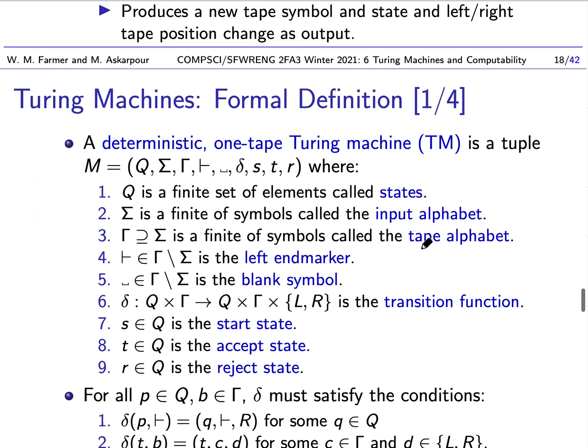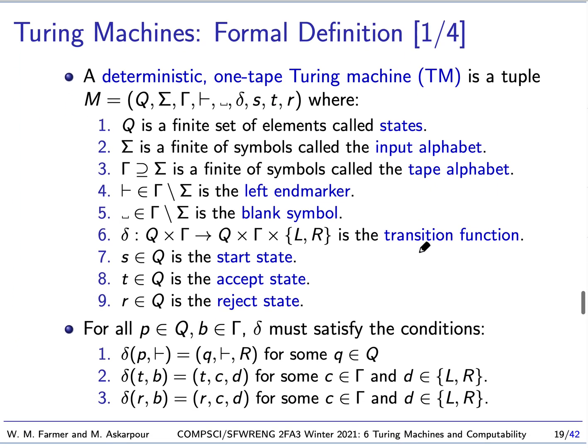Here's the formal definition. This is a definition for a deterministic one-tape Turing machine. There are many kinds of Turing machines — some are non-deterministic, some have multiple tapes. But for us, we're going to use a definition that's deterministic, has one tape, and this definition follows Kozen's book. Like our other machines, it's presented as a tuple.